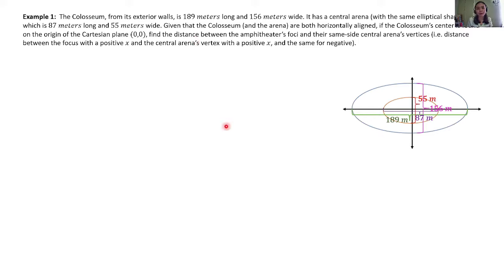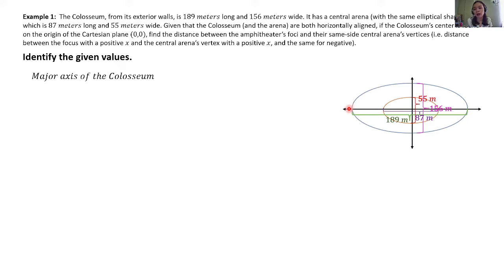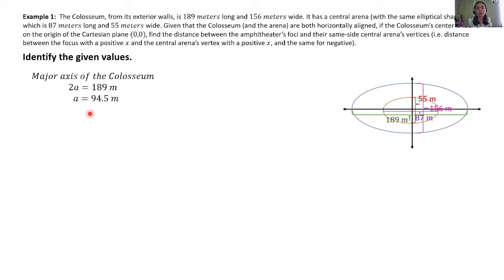We will follow the steps presented earlier. For the first step, identify the given values. For the major axis of the Colosseum: the Colosseum is 189 meters long, and the length of the major axis is equal to 2a. So we have 2a = 189 meters. Dividing both sides by 2, we get a = 94.5 meters. The vertices are V₁ with coordinates (94.5, 0) and V₂ with coordinates (−94.5, 0). The center is at the origin, so from the origin we count 94.5 units to the right and to the left. This is because the orientation of our ellipse is horizontal.